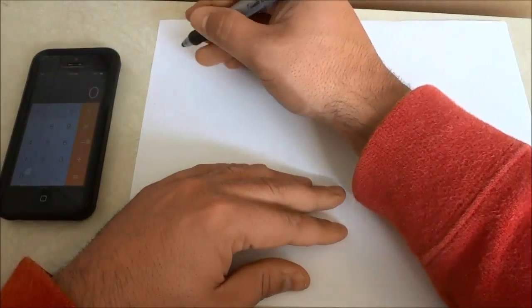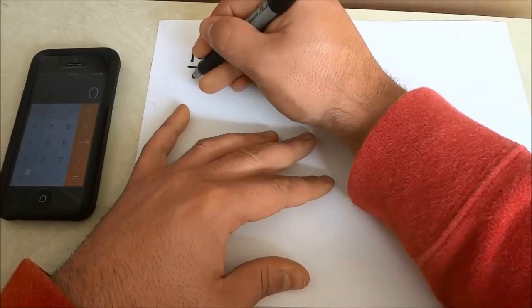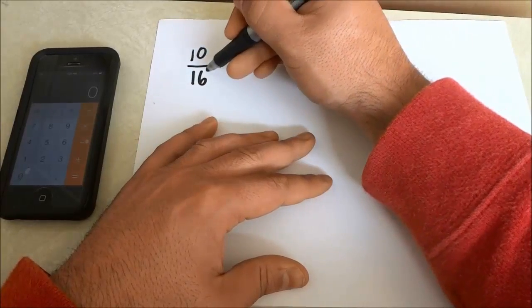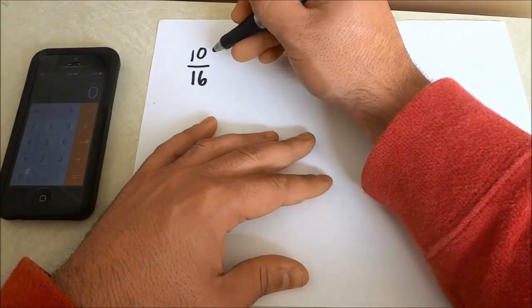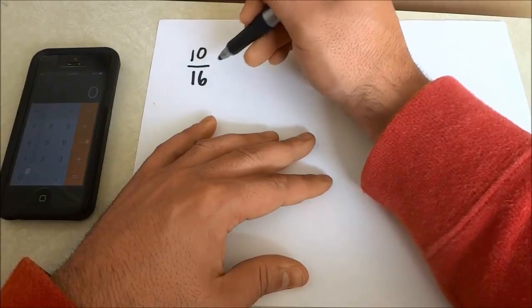So let's just imagine that on a test you received 10 out of 16. So out of 16 possible marks, you got 10 of the 16 possible marks.